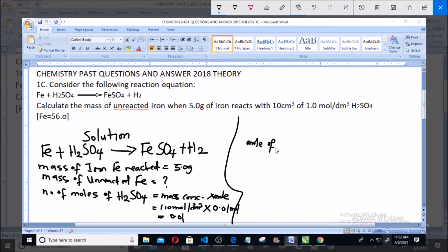Number of moles of iron is equals to mass over molar mass, which is equals to 5.0 gram over 56.0 gram per mole. Gram cancel gram. The answer is equals to 0.089 mole.